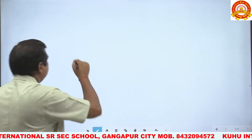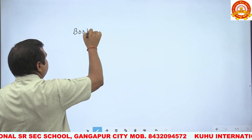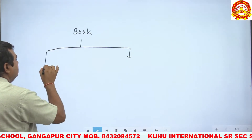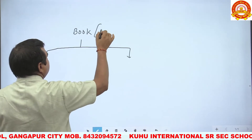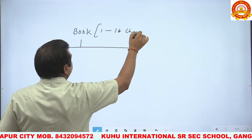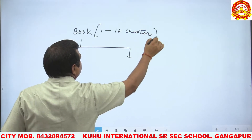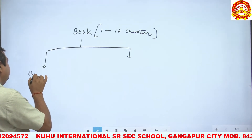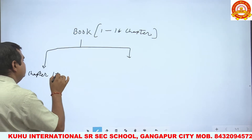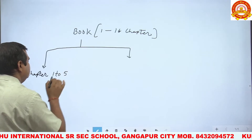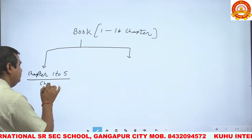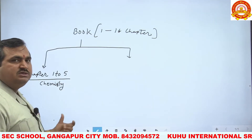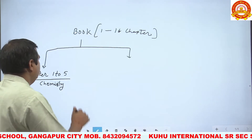The whole book is divided into 4 parts. Total chapters are 1 to 16. Chapters 1 to 5 cover Chemistry.